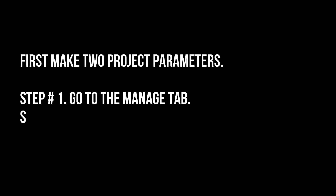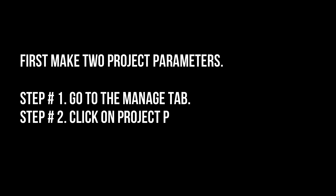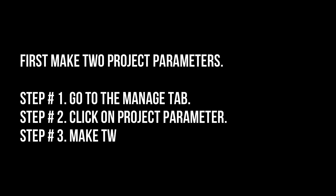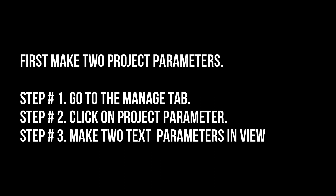First, make two project parameters. Step number one, go to the Manage tab. Step number two, click on Project Parameter. Step number three, make two text parameters in View Category.